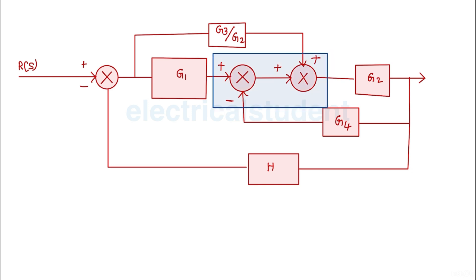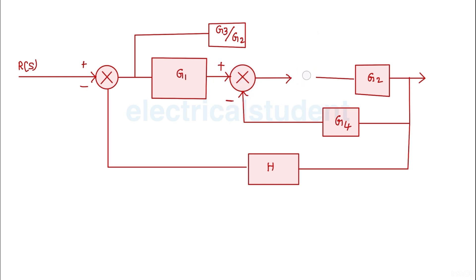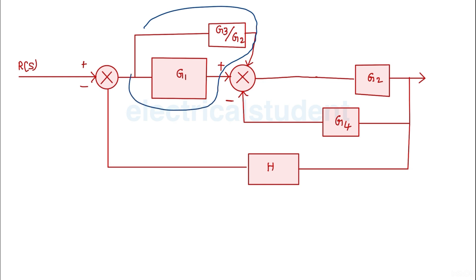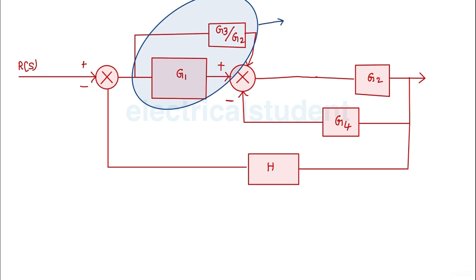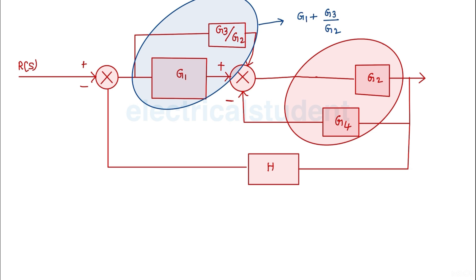The key thing in this problem is to combine these two summing points. By doing that, these two blocks form a parallel path, so the parallel combination will be g1 plus g3 over g2.